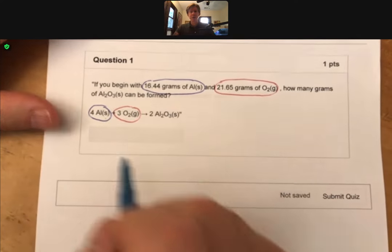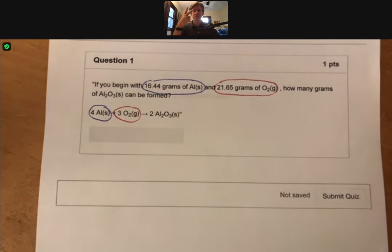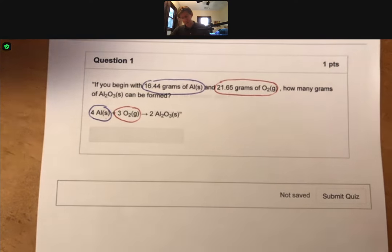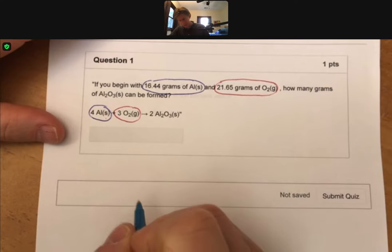When you do a limiting reactant, you're going to do two sets of picket fences, what we might call two sets of stoichiometry, or two sets of unit conversion problems, just to get one answer. And that one answer is always the smallest number of grams, or the smallest amount of product that you can make. So, let's show this, how you do this.